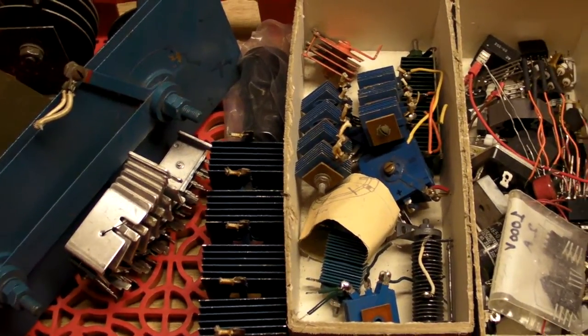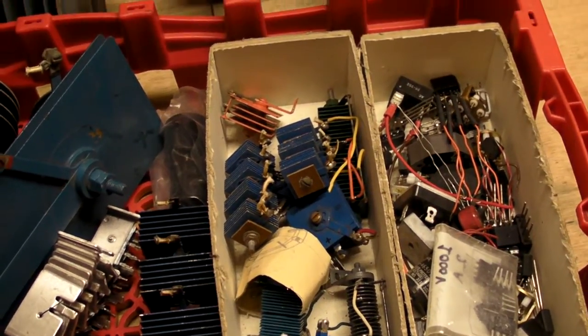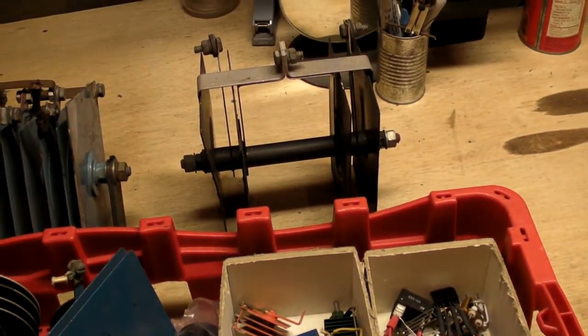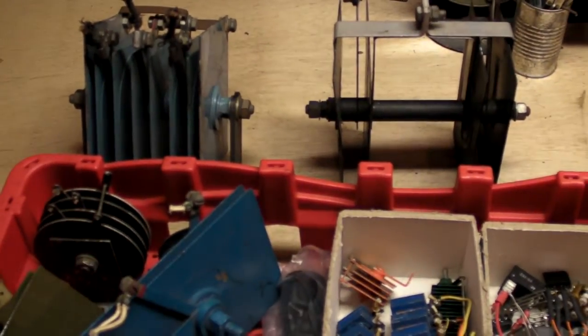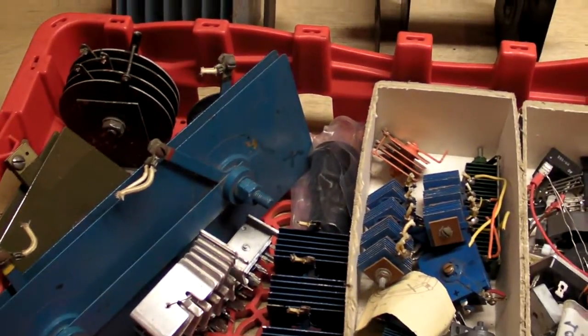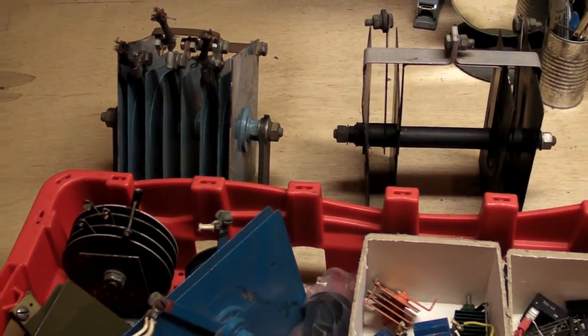Before we had silicon and germanium rectifiers we had the selenium and copper oxide. I put them on curve tracers but I won't be putting any of these on curve tracers, but they're still noteworthy to talk about.